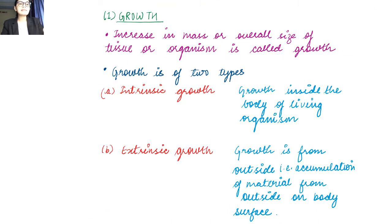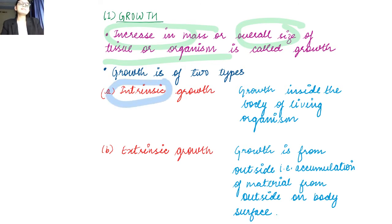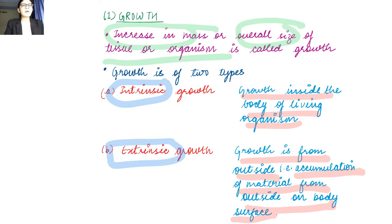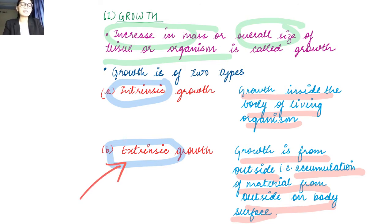When we come to growth: growth is an increase in the mass or overall size of a tissue or organism. There are two types — intrinsic growth, which is growth inside the body of a living organism, and extrinsic growth, which is growth from the outside, i.e., accumulation of material from outside on the body surface. Why is growth not a defining property? Think of a mountain — definitely a non-living thing. If soil keeps accumulating on it, that is extrinsic growth. So you cannot say growth is a defining characteristic because non-living things also exhibit growth.